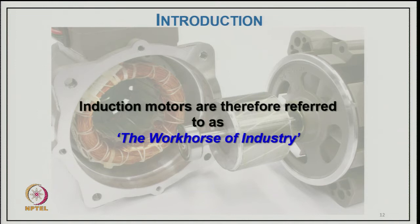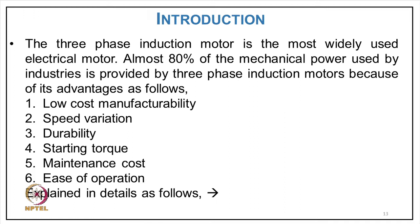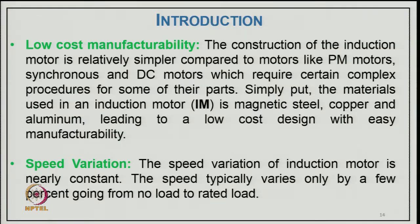Induction motors are referred to as the workhorse of industry because they are the most commonly used motors — cheapest, simplest, and most robust. Three-phase induction motors provide about 80 percent of mechanical power used in industry. Their advantages include: low manufacturing cost, because construction uses magnetic steel, copper, and aluminum; speed variation that is nearly constant, varying only about three percent from no load to rated load.